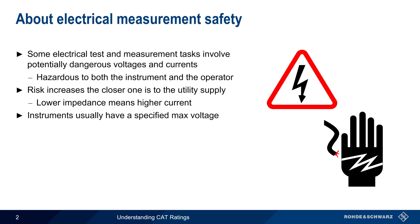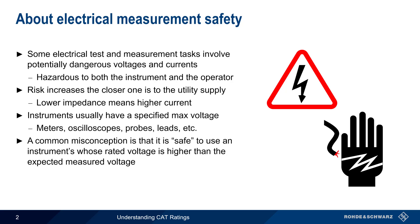Test and measurement instruments normally have a specified maximum input voltage, and this applies not just to multimeters and oscilloscopes, but also to the leads and probes used with these instruments. A very common misconception is that it's safe to use an instrument when the instrument's rated voltage is higher than the expected measured voltage. One reason why this assumption is dangerous is that it ignores the possibility of something called transients.